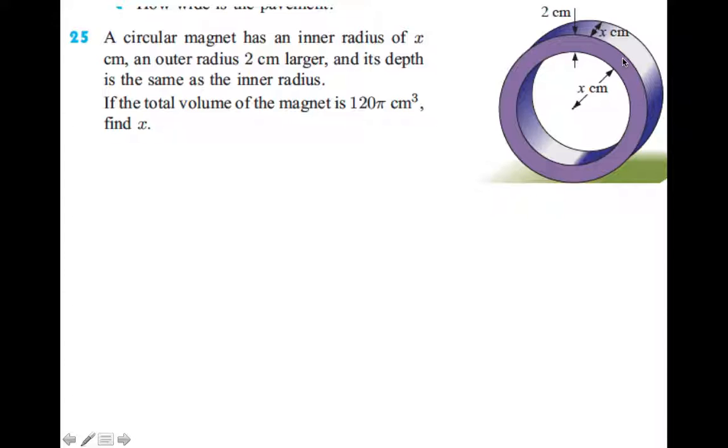So that one is two centimeters more and it shows you here with the arrows pointing there two centimeters. That means this part here is two centimeters. So from the center all the way to there would be x plus 2, x plus 2 would be the radius.